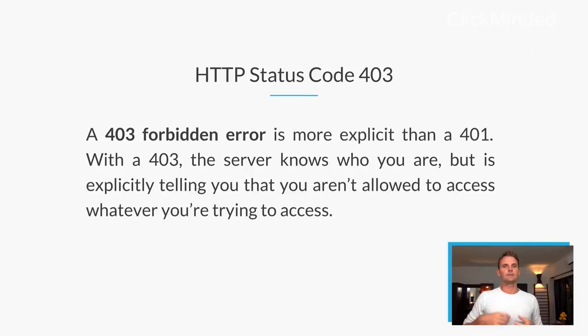A 403 is similar to a 401 but has a unique difference. A 403 status code is Forbidden, and it's much more explicit than a 401. A 403 is saying: we know who you are, you tried to log in, but we're explicitly telling you that you're not allowed to access what you're trying to access. An example: if I go to a bar with an out-of-state ID and the bouncer says 'do you have a different ID?', that's a 401 — try again. A 403 would be if they said 'we know you — you can't come in here.' That's explicitly telling you you can't get in.